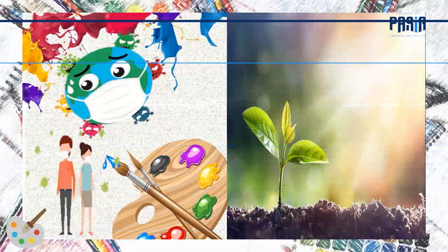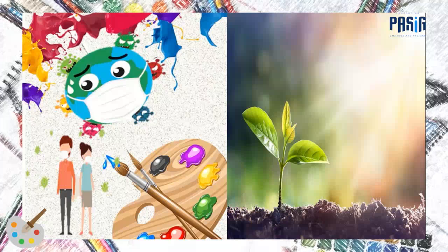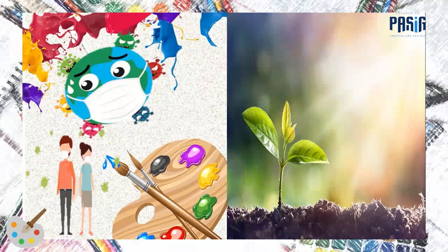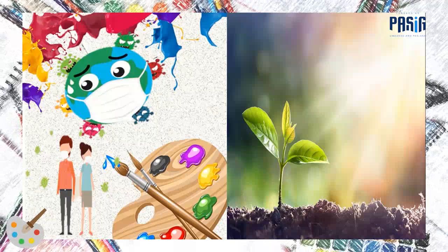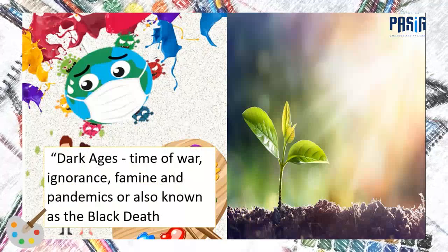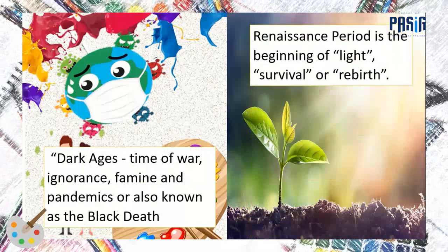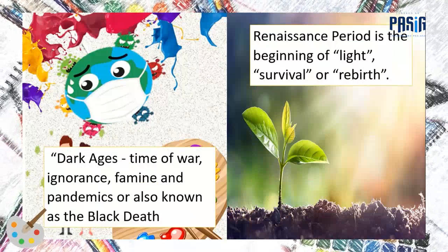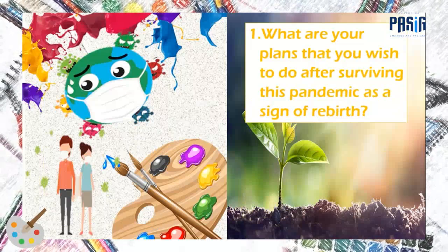Now we all know that we are at the peak of this global pandemic. As we experience this new normal, we have created a lot of realizations and reflections about what has been done in the past, what we could do in the present, and what might happen to us and our family members in the coming days. Going back to the dark ages, often branded as a time of war, ignorance, famine, and pandemics such as the Black Death, the arrival of the Renaissance period represents the beginning of life, survival, and rebirth. The question is: what are your plans that you wish to do after surviving this pandemic as a sign of rebirth?